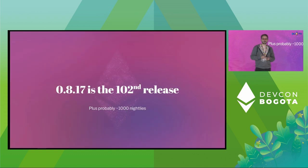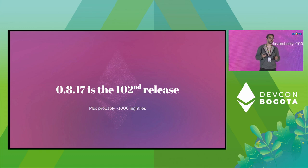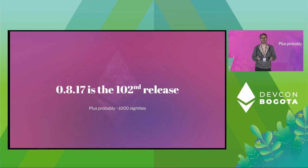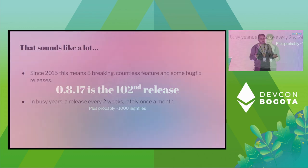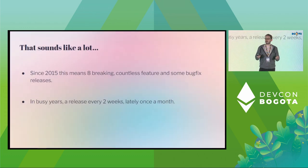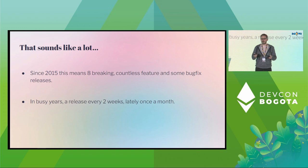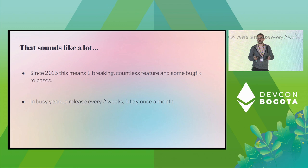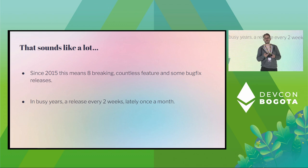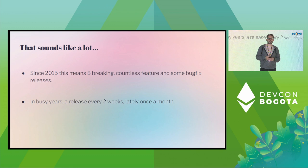0.8.17 is the latest release — it's the 100th release. We already had more than 100 releases, which is just insane. We probably have more than 1,000 nightlies. Basically, we had eight breaking releases, a bunch of feature releases, and sometimes bug fix releases as well. In some years we had releases every two weeks; lately it's more monthly, and I hope that continues — maybe bi-weekly releases, but at least monthly. I'm saying this just to show how active Solidity development is.